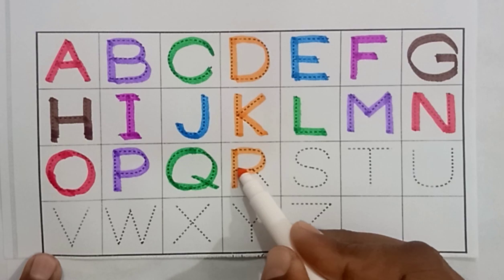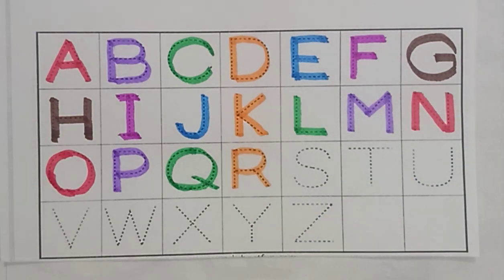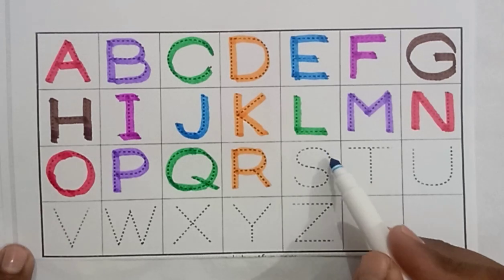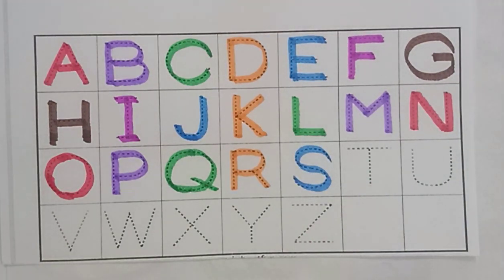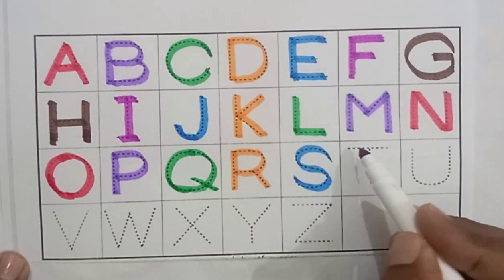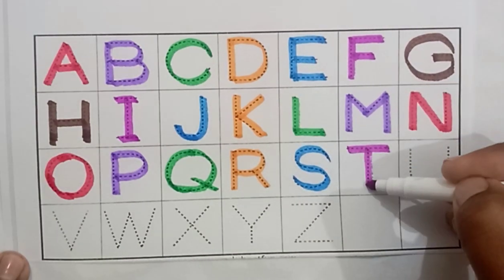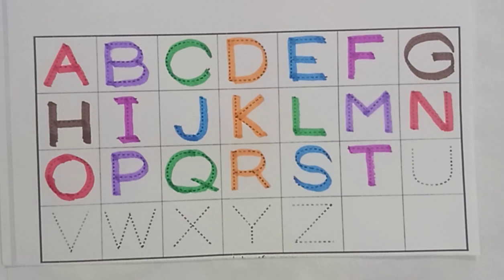Purple color P, P for parrot. Green color Q, Q for queen. Red color R, R for rabbit. Blue color S, S for sun. Purple color T, T for tree.